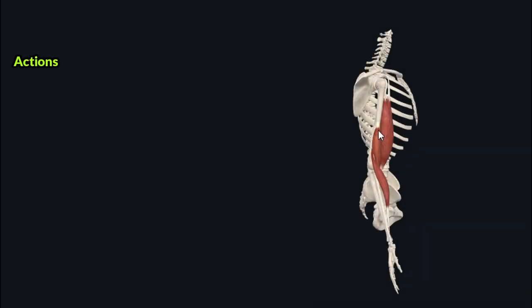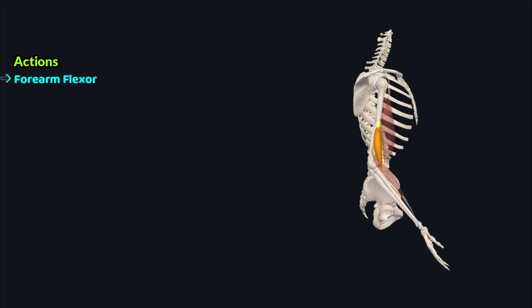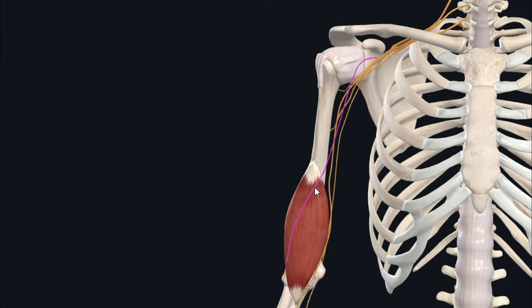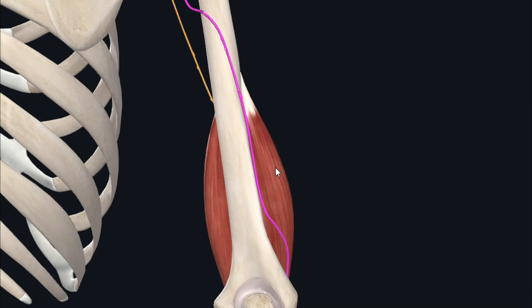Unlike the biceps brachii, which is biarticular and crosses both the shoulder and elbow joints, the brachialis runs only across the elbow joint and is a pure flexor of the forearm at the elbow joint. Like the other anterior compartment muscles, the brachialis is supplied by the musculocutaneous nerve, though in some people the lateral fibers receive dual innervation from the radial nerve.